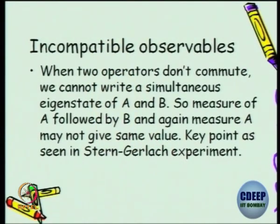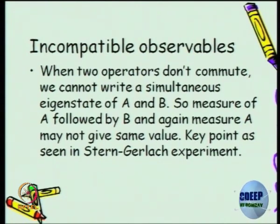So what are incompatible observables? We have spent a lot of time on compatible observables, where one observable can have degenerate or non-degenerate eigenvalues. In the non-degenerate case, they simply share a simultaneous eigenbasis. Incompatible observables means they do not commute and we cannot write a simultaneous eigenstate of A and B. So measurement of A, followed by B, and then A again may not give the same value. This plays a crucial role in the Stern-Gerlach experiment.